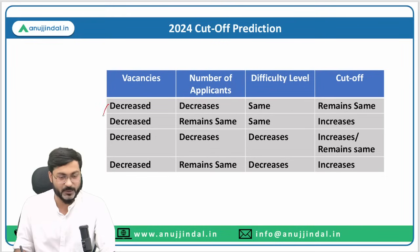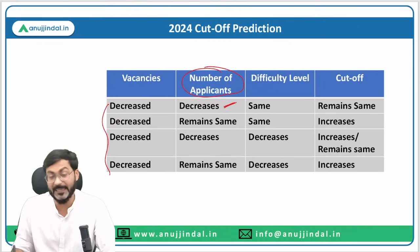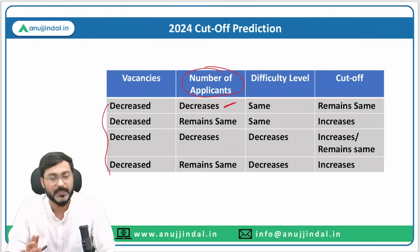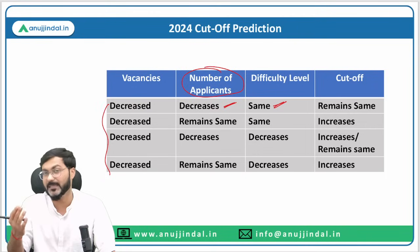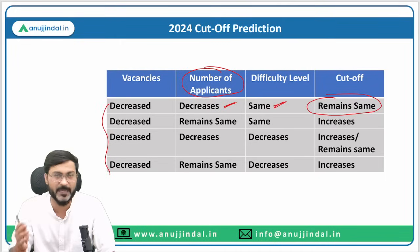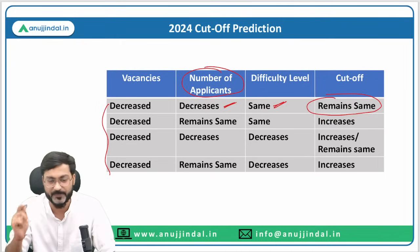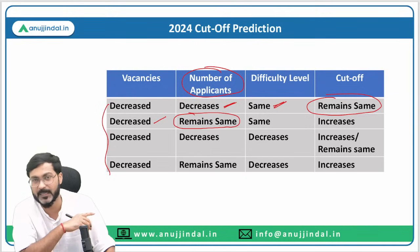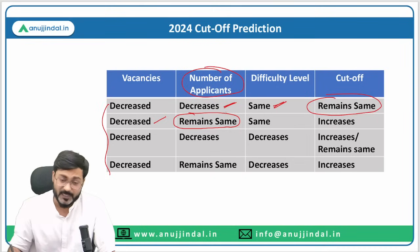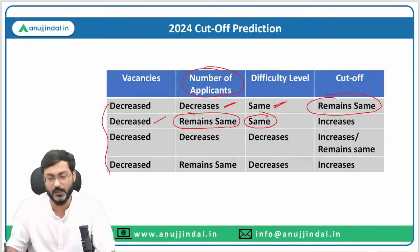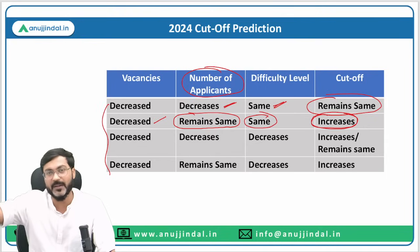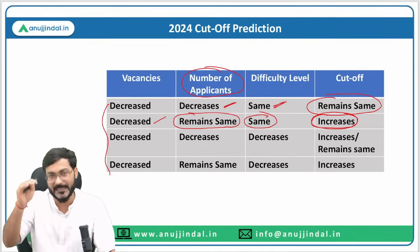If the number of applicants decreases in proportion to the number of vacancies, and the difficulty level remains the same, then the cutoff will remain approximately the same. But if the vacancies are decreased and the number of applicants remains the same as last year 2023, and the difficulty level also remains the same, then definitely the cutoff will go up — because they will have to select fewer students compared to the previous year.